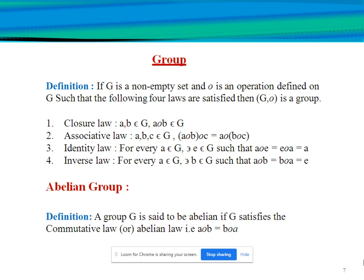Next I will explain group. The definition of group: if G is a non-empty set and ∘ is an operation defined on G such that the following four laws are satisfied, then (G, ∘) is a group. First, closure law: for any a, b belonging to G, a∘b also belongs to G. Second, associative law: for a, b, c belonging to G, (a∘b)∘c = a∘(b∘c). Third, identity law: for every a belonging to G, there exists e in G such that a∘e = e∘a = a.